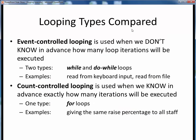Comparing the two looping types: event-controlled looping, or while and do-while loops, are used when we don't know ahead of time how many loop iterations will be required. For example, if we are reading user input from a keyboard, or reading the contents of some text file, we don't know in advance how many keystrokes or text lines there will be, so we just have to keep reading until we're done, whenever that may be.